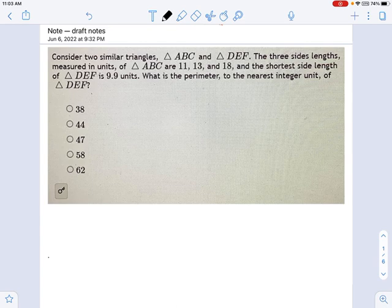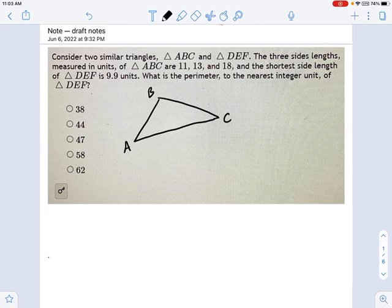So I've got here two triangles, and I'm going to draw one of them. Here's triangle ABC. I'm told that the side lengths are 11, 13, and 18. So let's just put some numbers on here: 11, 13, and 18.